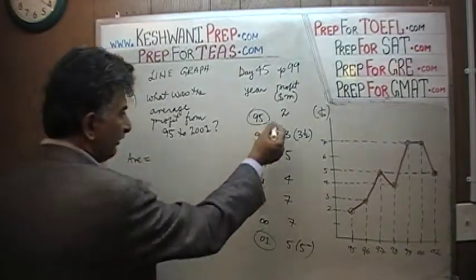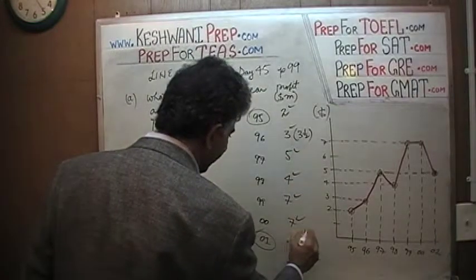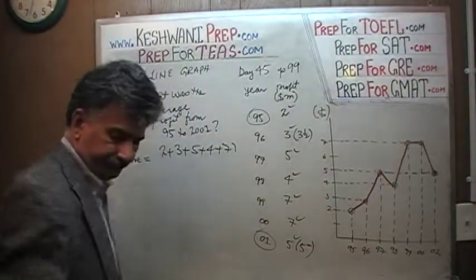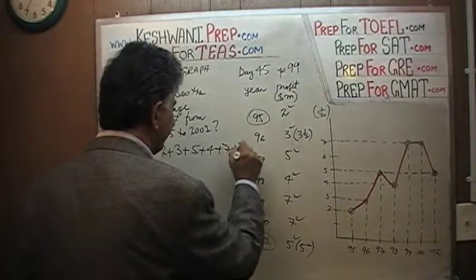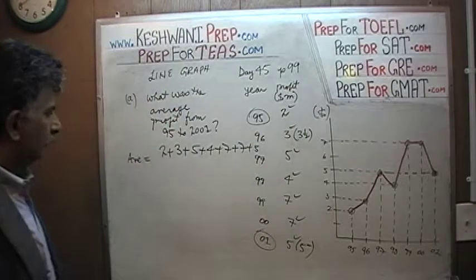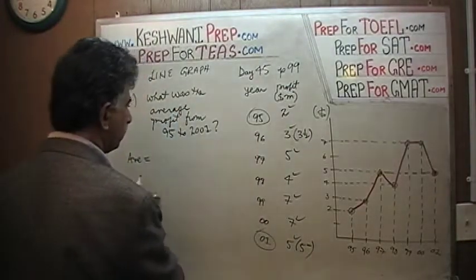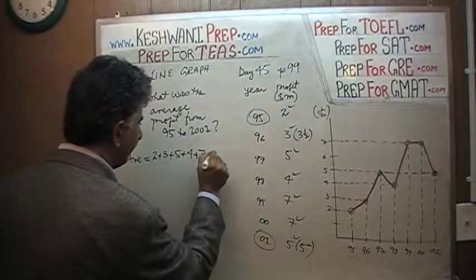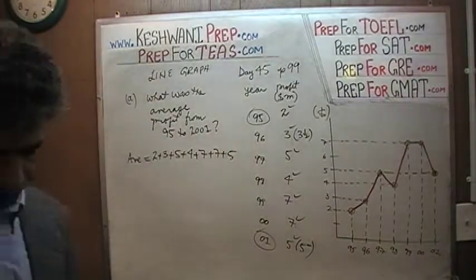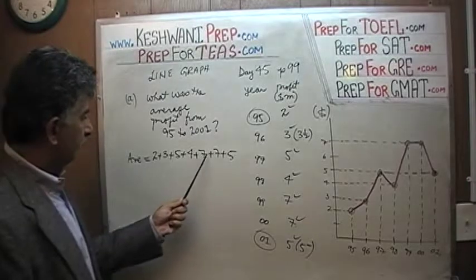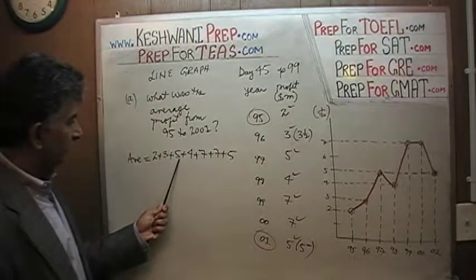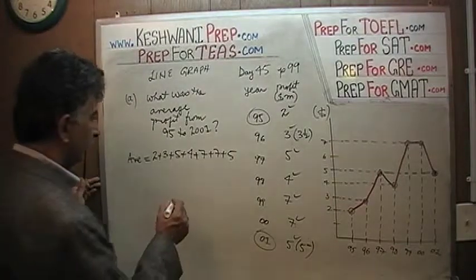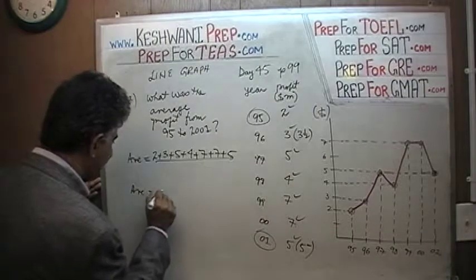The average is going to be the sum of these figures: 2, 3, 5, 4, 7, 7, and 5. Let's add them up: 2 plus 3 is 5, 5 plus 5 is 10, then I see 14 — 10 plus 4 is 14, 14 plus 5 is... wait, so 10 is 24, 24 plus 4 is 28, 28 plus 5 is going to be... it adds up to 33.